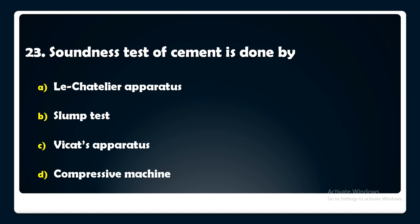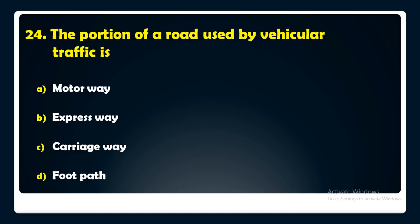The portion of a road used by vehicular traffic is called — motorway, expressway, carriageway, or footpath? The answer is: the portion of a road used by vehicular traffic is the carriageway.